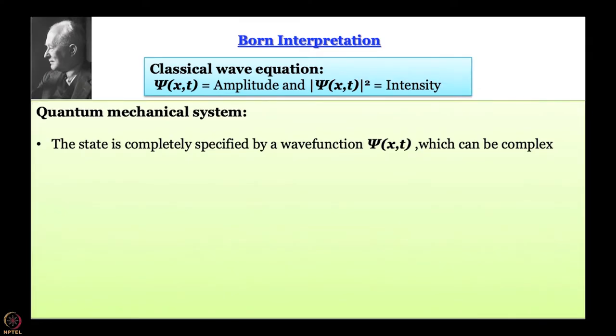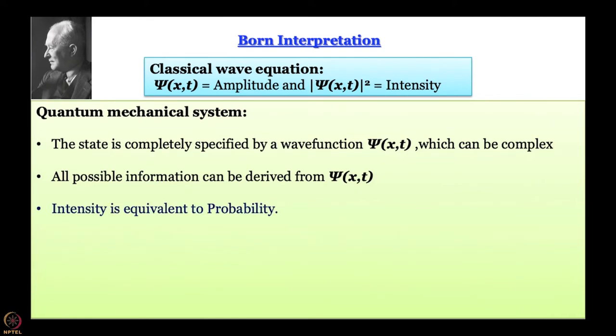In a quantum mechanical system the state is completely specified by the wave function ψ, and ψ might as well be complex. You can get all possible information by using an operator. Now comes Born's interpretation: intensity is the intensity of this wave that we have. Born interpreted this as something to do with probability. Why so? Because if you are talking about a particle and the intensity of the particle is more at some point than at some other point, that essentially means it is more probable to find the particle at the first point.